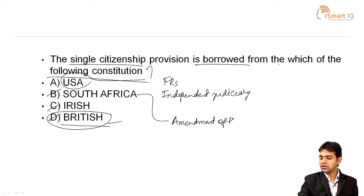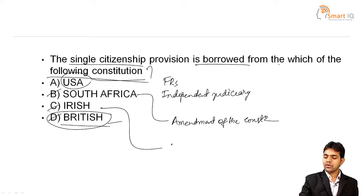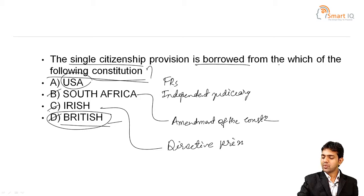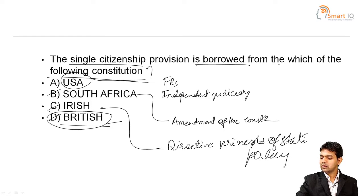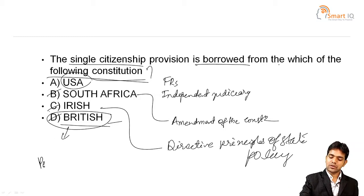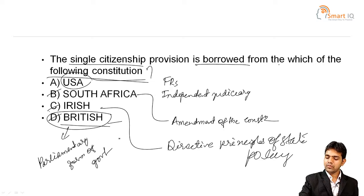From South Africa, the amendment of the constitution procedure is borrowed. From the Irish Constitution, the Directive Principles of State Policy (DPSP) are borrowed. From the British Constitution, both single citizenship and the parliamentary form of government are borrowed.